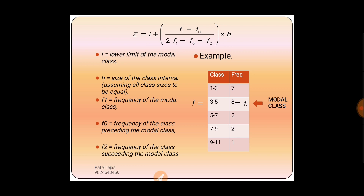f1 is the frequency of the modal class, so f1 = 8. f0 is the frequency of the class just above the modal class, so f0 = 7. f2 is the frequency of the class just below the modal class, so f2 = 2. This is how we find l, f1, f0, f2, and h. First decide the modal class; its frequency is f1, the one above is f0, the one below is f2, and l is the lower limit.